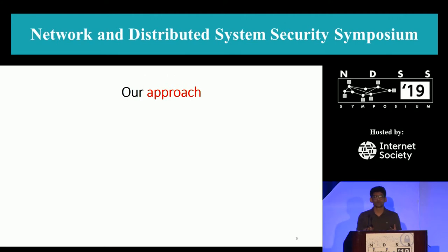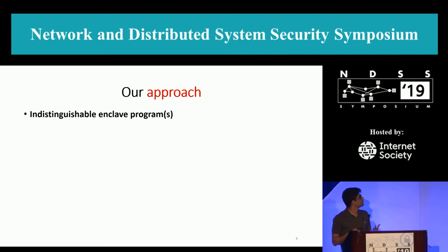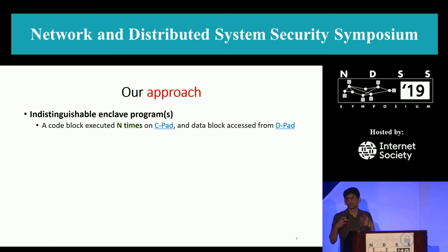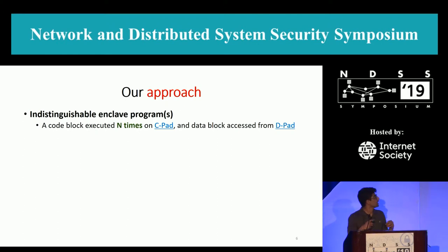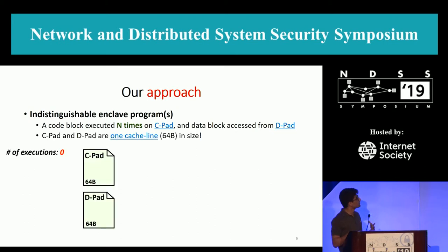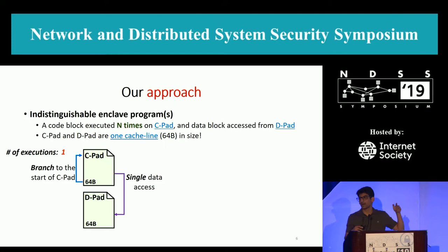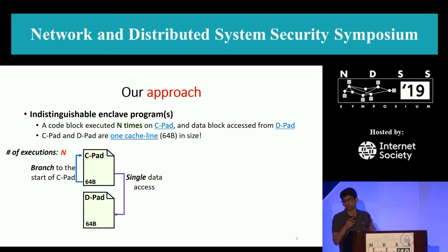From these lessons, we come up with another idea: what if we create indistinguishable enclave programs? Consider a hypothetical program where a specific code block is executed from a fixed location for N number of times on a fixed location called the CPAD, and it performs a single data access on a fixed location called the DPAD. Both of these are 64 bytes in size — one cache line. There is a single data access from a fixed location in the CPAD, and a branch to the start of the CPAD after it executes. You can think of it as a simple for loop that runs for N executions.